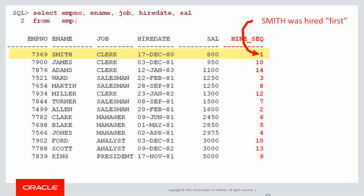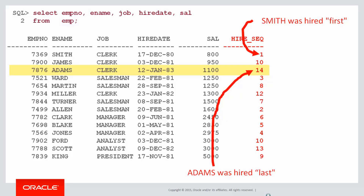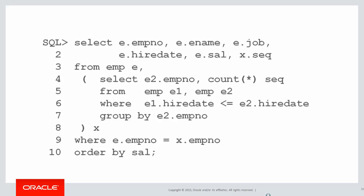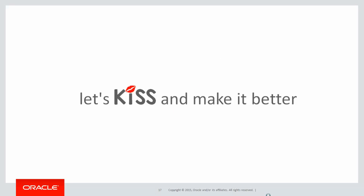For example, Smith, who happens to be the first row, also happens to have joined first in December 1980. But Adams, the third row, joined in January 1983, so he was hired last. We want to assign a number in the order in which everyone joined the company. Now, you don't have to use analytics for this — you can use plain old simple SQL. But as you can see, that's not so much fun to maintain and probably harder to understand. We don't really want to be doing that. The KISS principle is about making SQL simple to understand, so let's KISS and make it better with analytics.